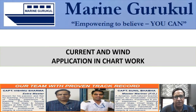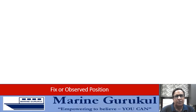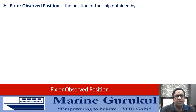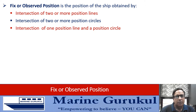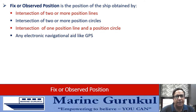The first is the fixed or observed position. This is the position of a ship obtained by intersection of two or more position lines, intersection of two or more position circles, intersection of one position line and one position circle — as covered in earlier videos on PLs and PCs — or a position obtained by a reliable electronic navigational aid like GPS, which provides position in coordinates of latitude and longitude.